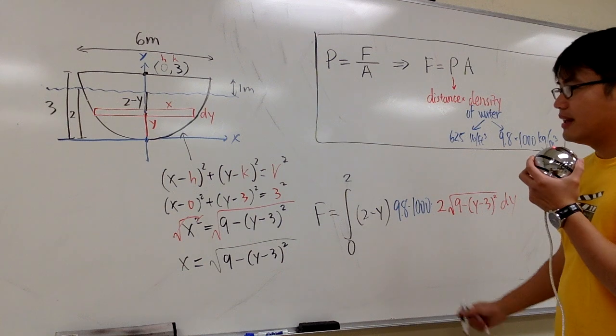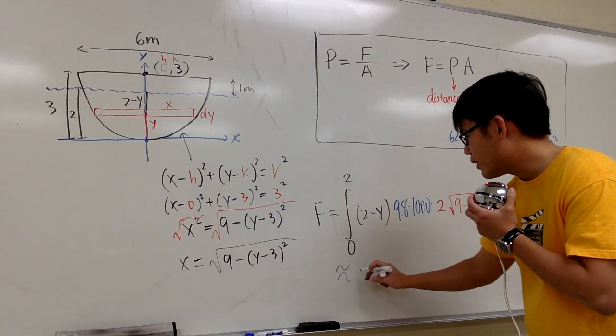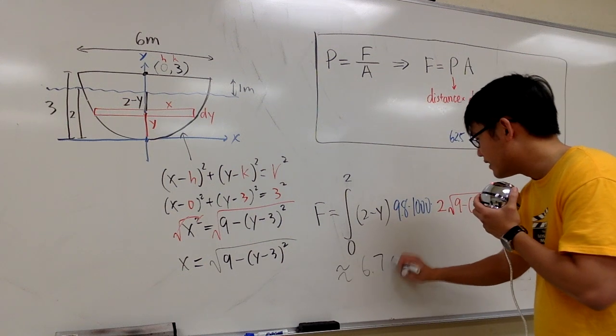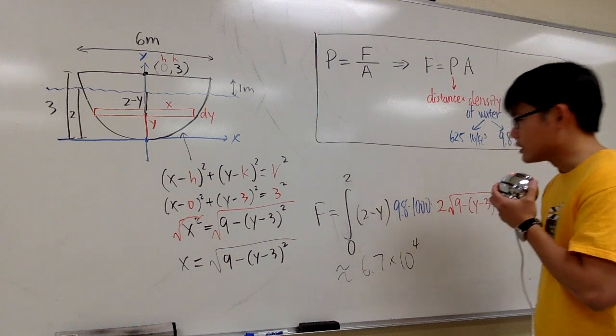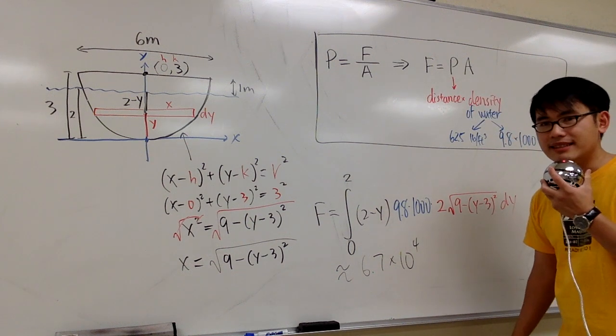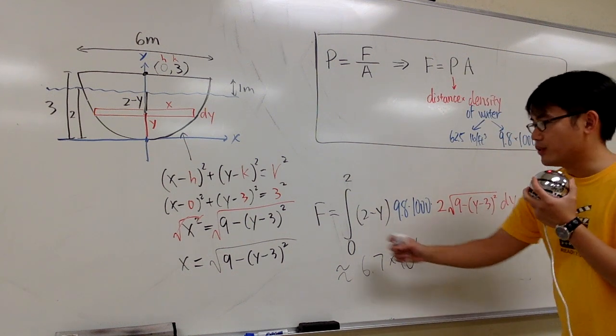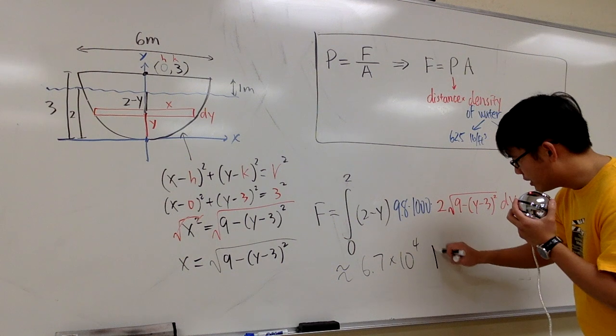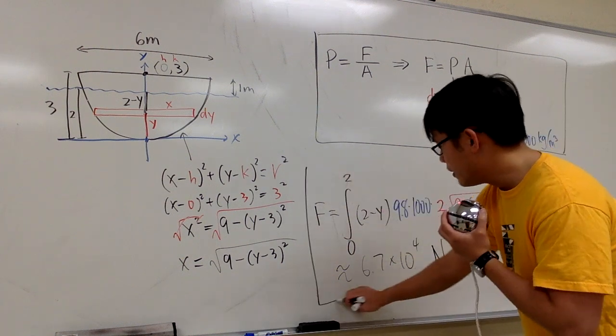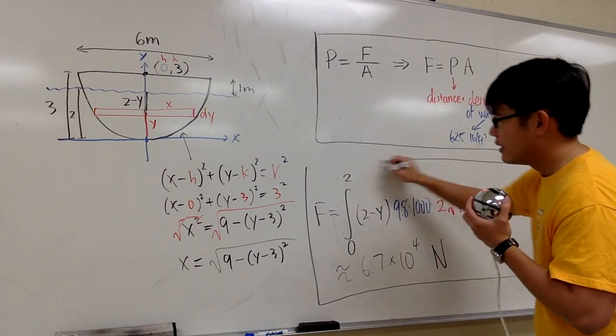And we are done, and let me just tell you the answer. This is approximately 6.7 times 10 to the fourth power. And because we are in the SI unit, the SI unit for force is newton. So we put N right here. And we are done. Like this.